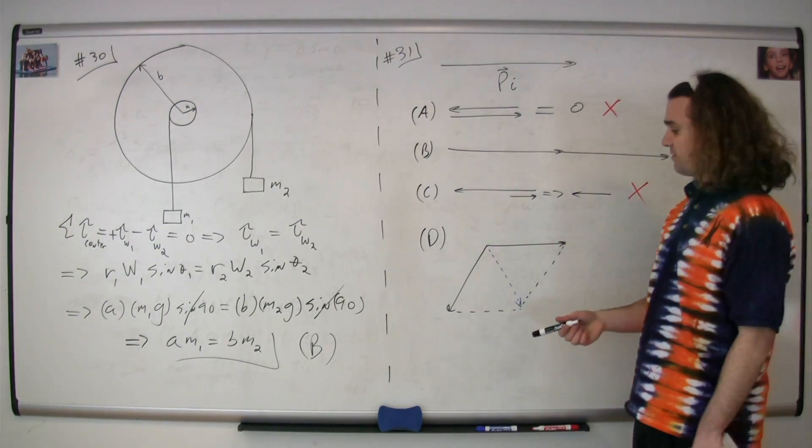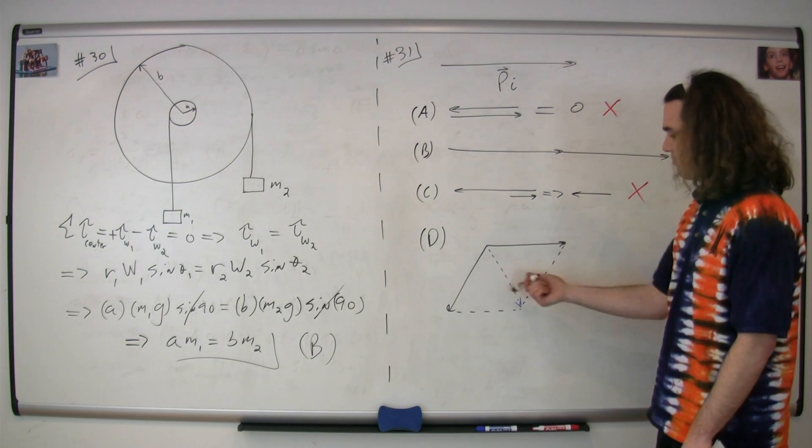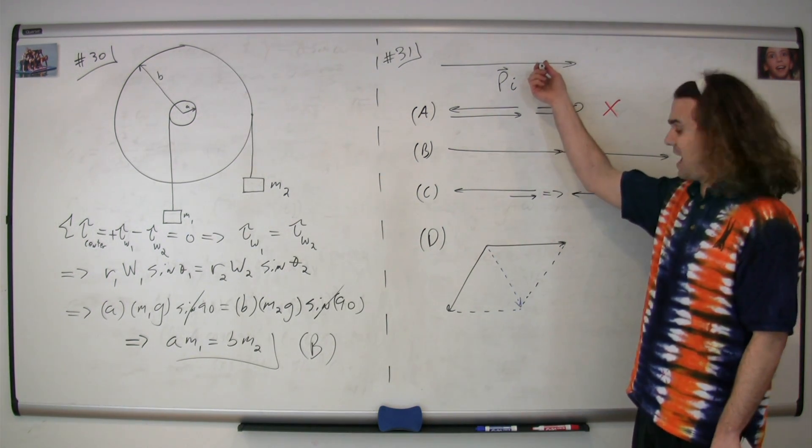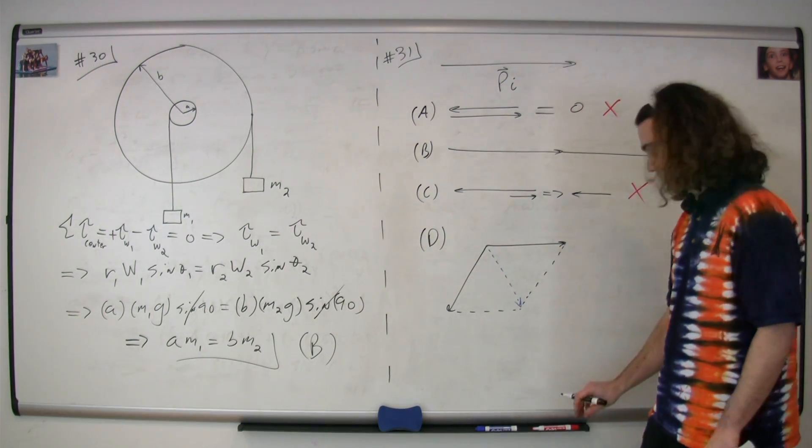The resultant vector for D, which I've drawn in blue just to make it more clear where it is, isn't going to be the initial momentum vector either. It's going to look something like this, so this can't be it.